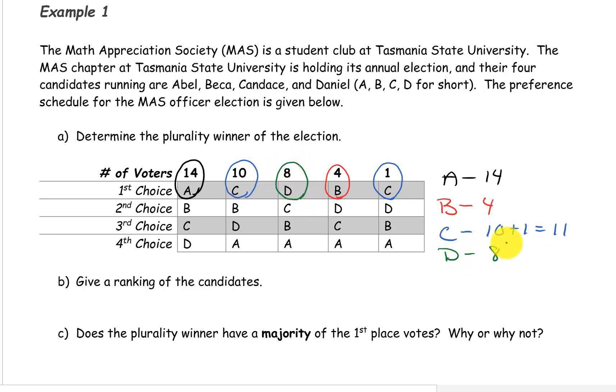So we can see that the candidate with the most first place votes is Candidate A.